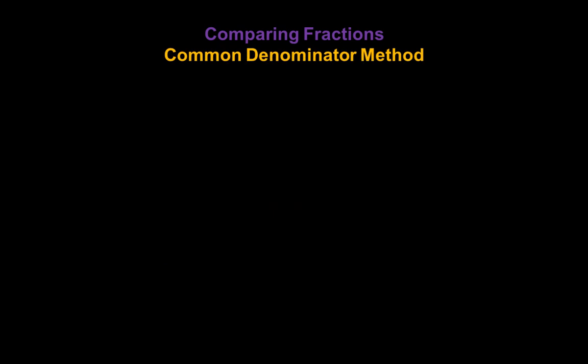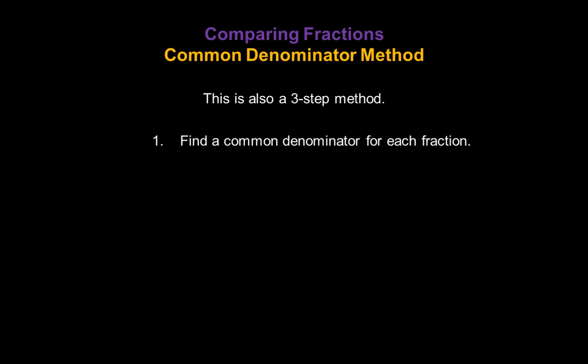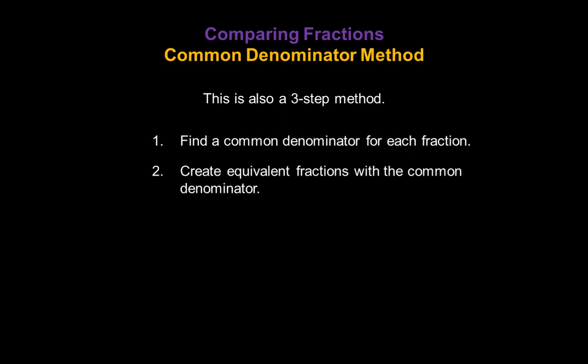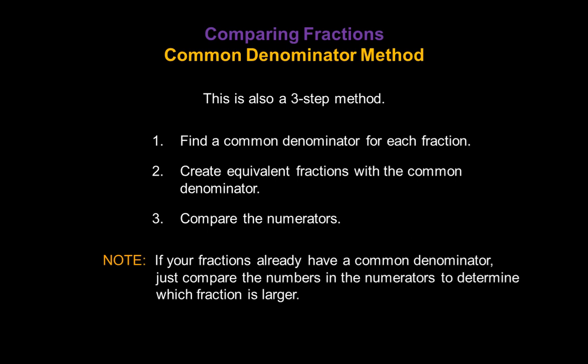Now let's take a look at the common denominator method. This is also a three-step method. Step 1: find a common denominator for each fraction. Step 2: create equivalent fractions using that common denominator. Step 3: compare the numerators. Please note — if your fractions already have a common denominator, all you have to do is compare the numbers in the numerators to determine which fraction is larger.